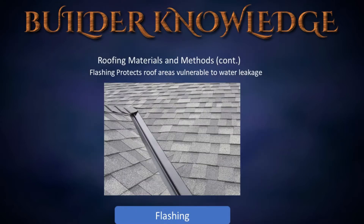Next is flashing. Flashing protects roof areas that are vulnerable to water leakage. It is typically galvanized metal but can be powder-coated to match your roof design.